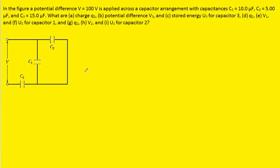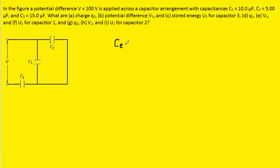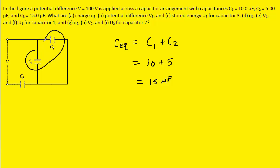First we're going to simplify this circuit until we have just one equivalent capacitor. We'll begin by combining the two capacitors marked C1 and C2. Those two capacitors are in parallel with one another, and to combine two parallel capacitors, we simply add the capacitance values. So C1 is 10 microfarads and C2 is 5 microfarads, giving us 15 microfarads equivalent capacitance.